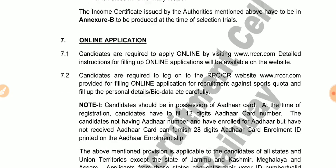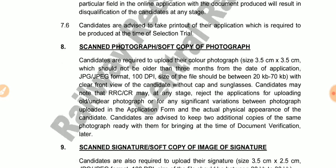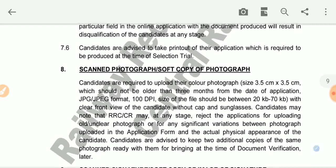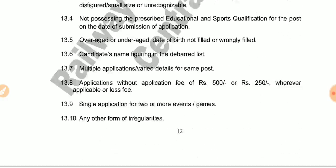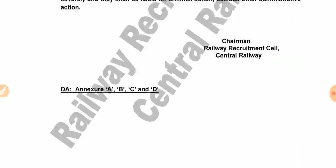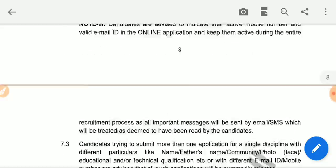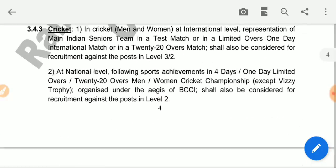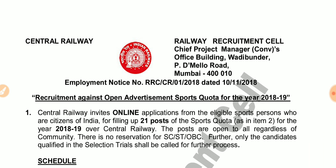If you want to take the online application, you can try that. If you have a scan document, make sure to use it correctly. If you have a national-level sport qualification, you will have a 3x2 priority. If you have international-level work, you will have a 5x4 priority.